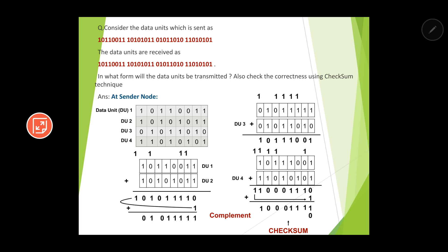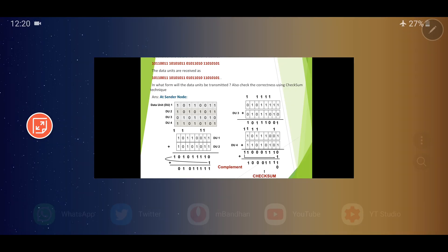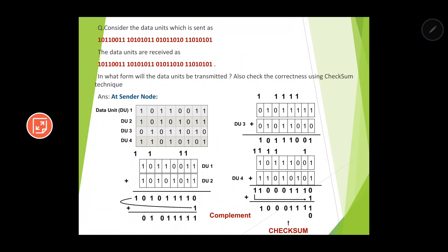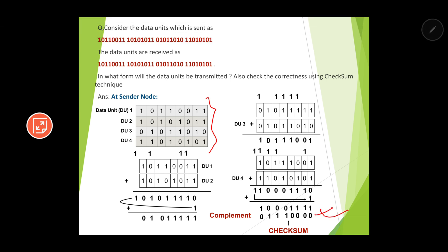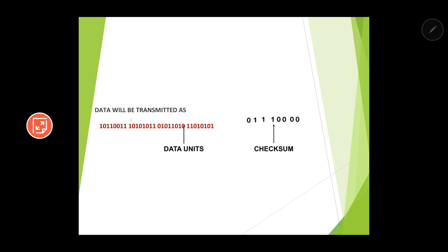We then take the result and add data unit 4 using binary arithmetic rules. After this addition we again get an extra bit, so wrap-around is performed again. After complementing the final sum — where 1 becomes 0 and 0 becomes 1 — we get the checksum value: 0,0,1,1,1,1,0. This checksum along with all the data units is transmitted via the transmission medium.